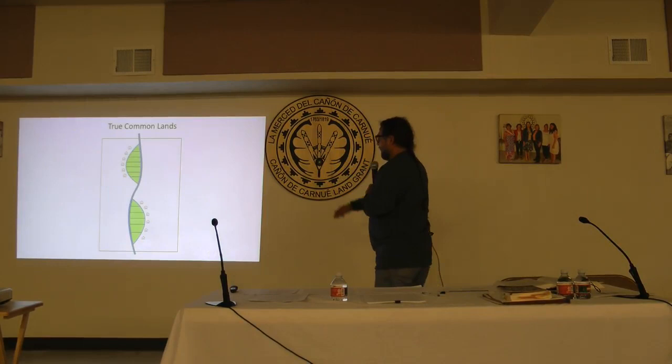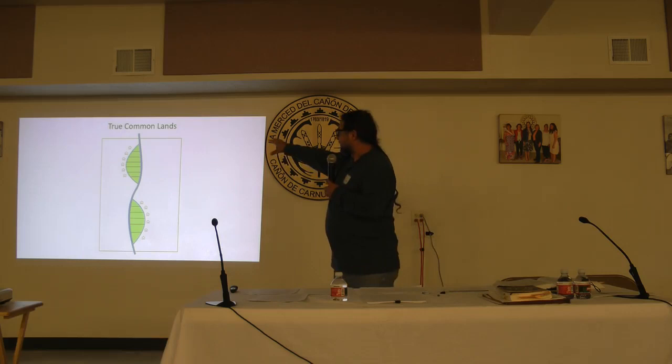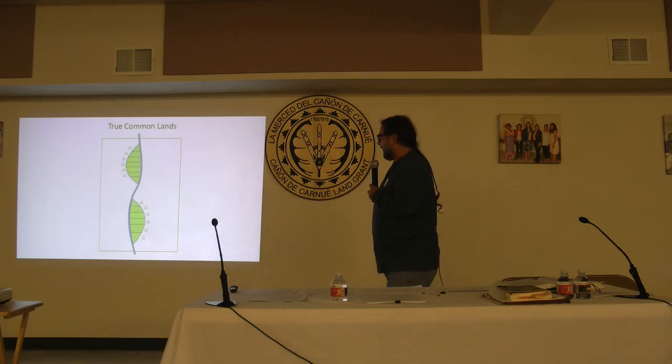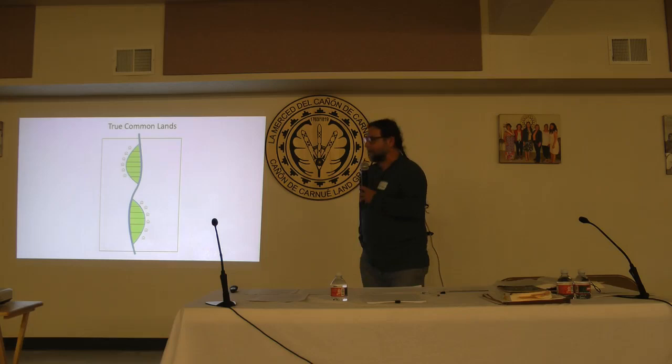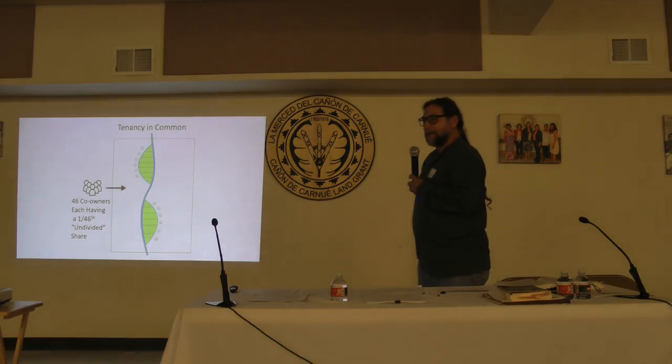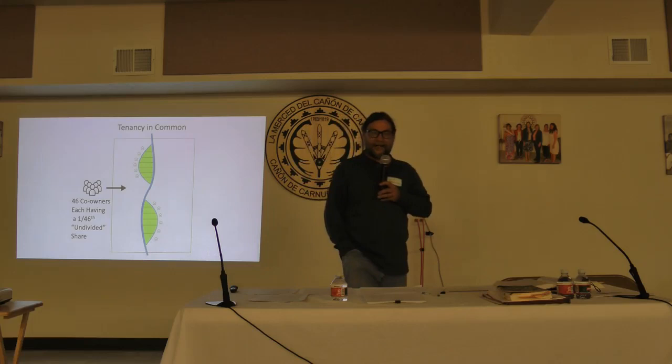This diagram shows a land grant: the green strips are the irrigated lands, the little houses are houses, and everything that's not green or a house is the common lands of the land grant. We all have a pretty good idea of what common lands are, but let's compare it to a tenancy in common.